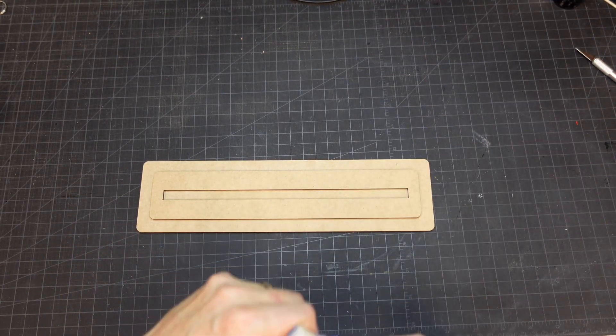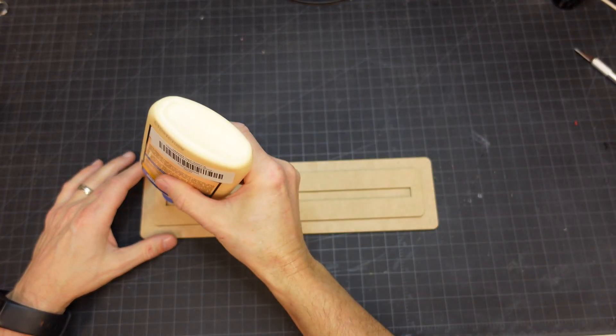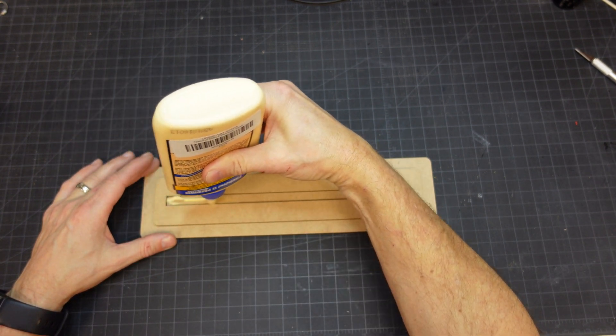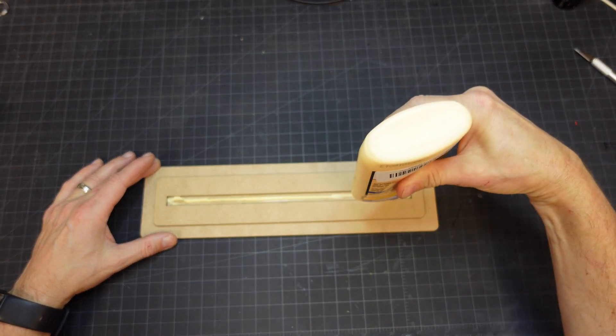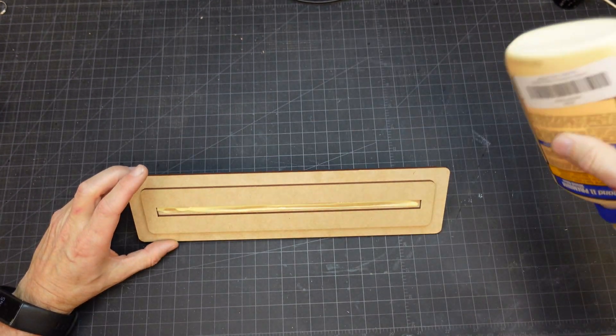The main assembly was then glued into the base. And yes, by now you've probably thought to yourself that there was no way to release the game pieces from the bottom like the original Milton Bradley game. And you'd be right.